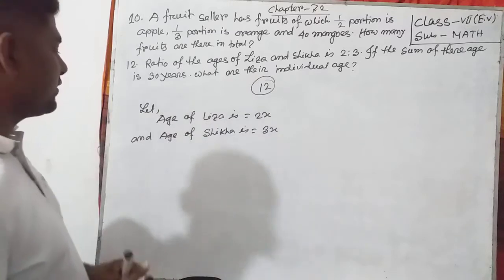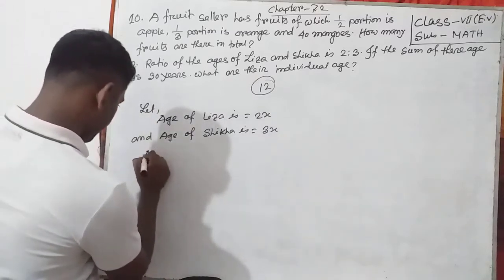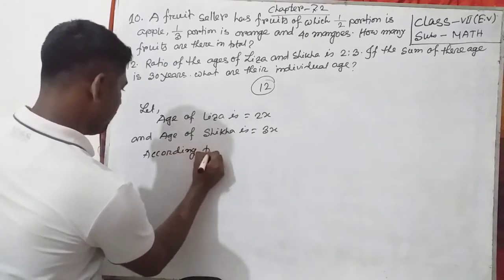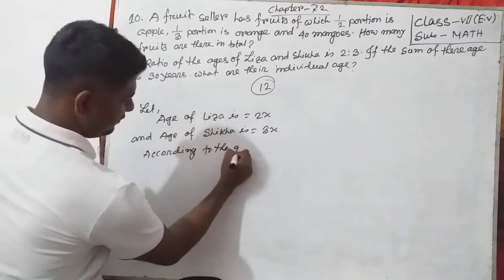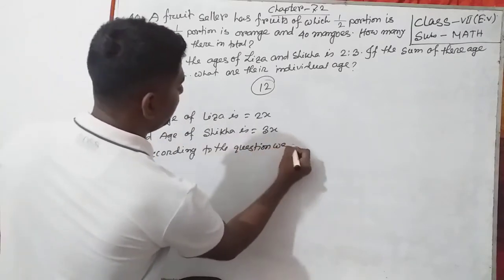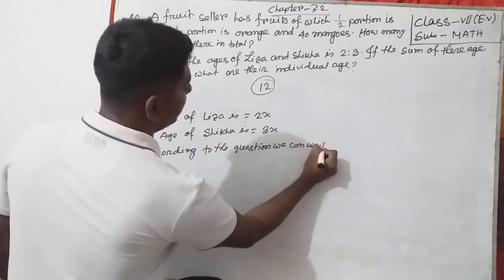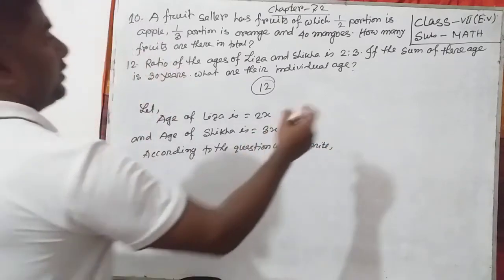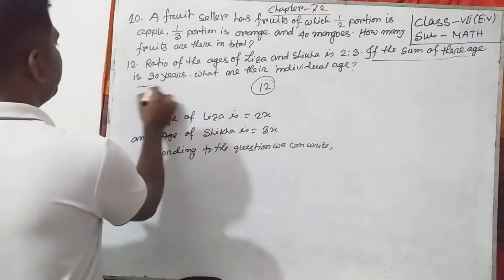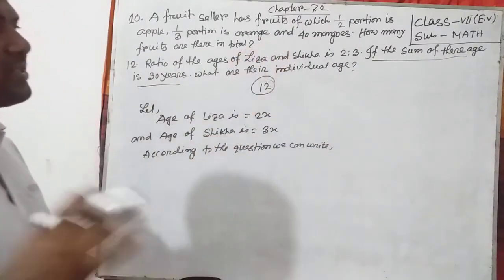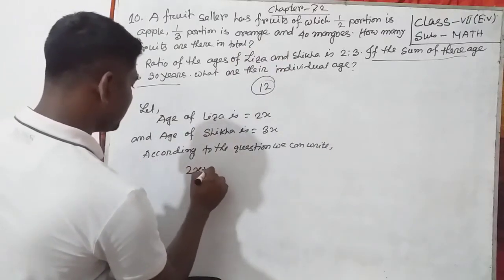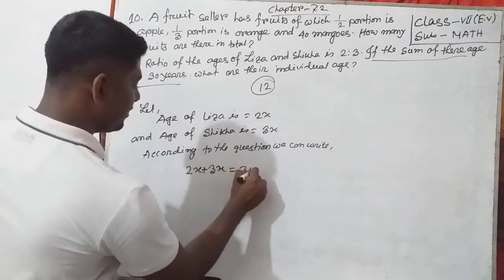According to the question, we can write: the sum of their ages is 30, so we can write 2x plus 3x equals 30.